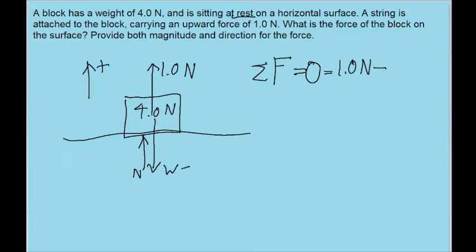Which again, given to us by the problem, is 4.0 newtons. So it's 1.0 newtons minus 4.0 newtons. And then finally, in the upwards direction, there is the normal force acting on the block.